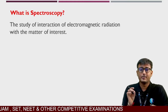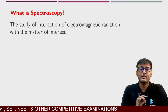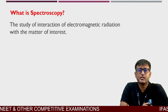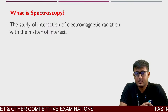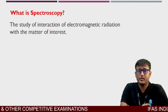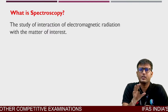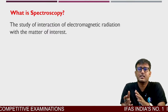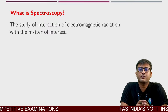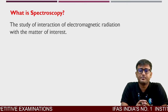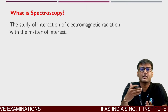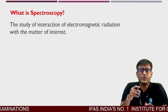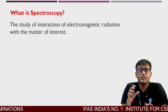Electromagnetic radiation is a form of energy, which we commonly call light. But there are many different types, depending on where it belongs in the spectrum.